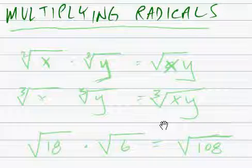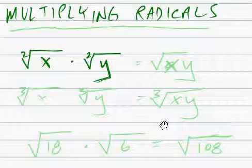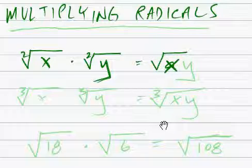And just to recap, the rule for multiplying radicals is pretty straightforward. You have the radical x and the radical y. As long as these are both the same root, it will be the radical of xy.